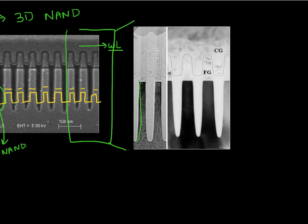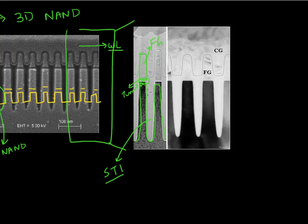This is the silicon. The two adjacent cells are separated by this shallow trench isolation or STI. Then you see this floating gate, which is floating and not connected to any of the terminals, so it is used for storing the charge. Between the floating gate and the silicon, you have your tunnel oxide, which is used to tunnel the electrons from your silicon into your floating gate. And over here you have this blocking oxide, which prevents the electrons from getting outside. And you have this control gate, which is wrapping around your floating gate.